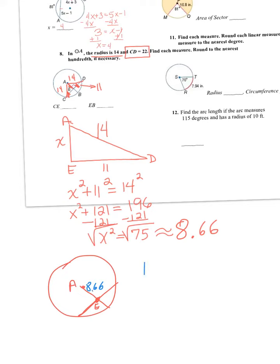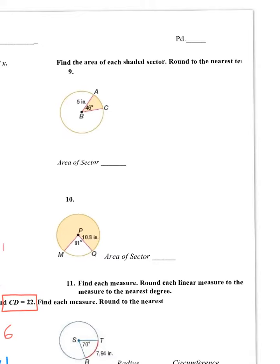So I just need to subtract 14 minus AE, which is 8.66. And you subtract that and that gives you 5.34. So the piece from E to B is 5.34. And then CE is just 11 because it's half of 22.